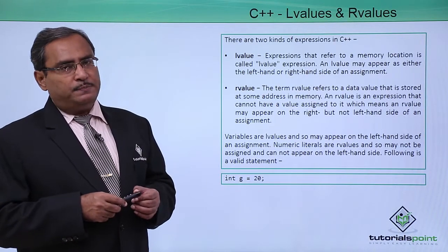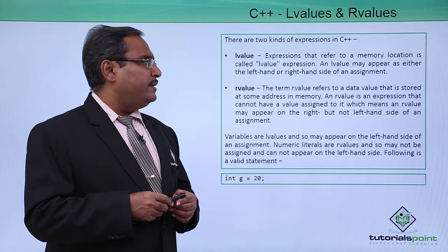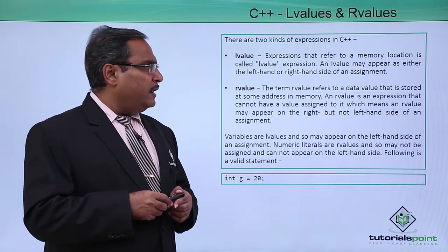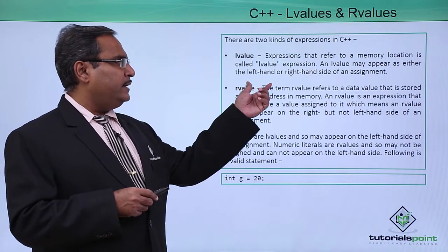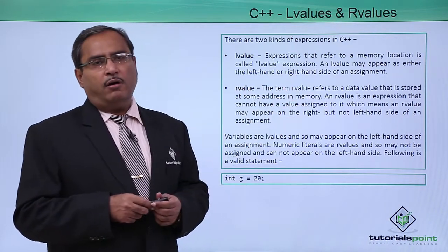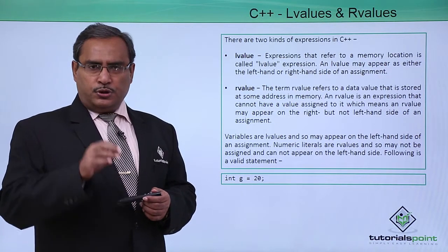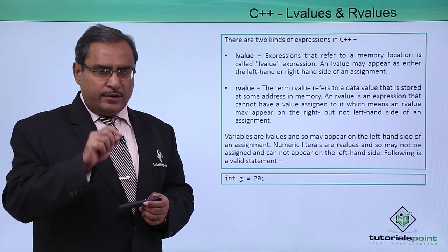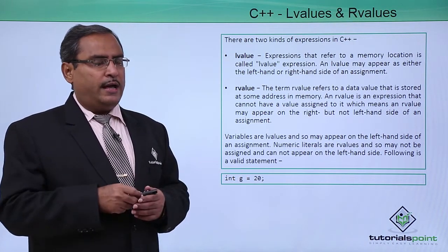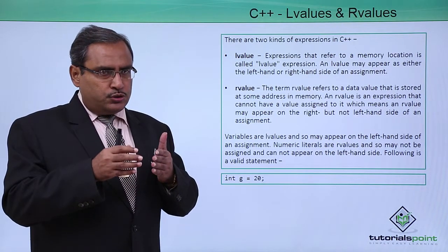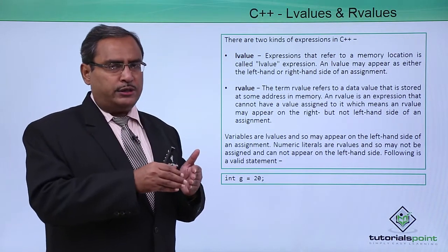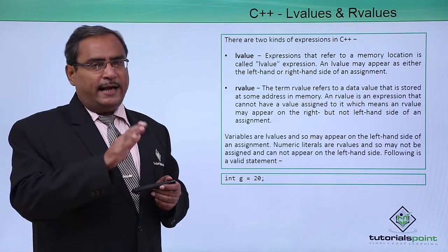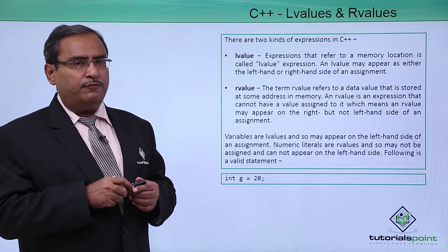There are two kinds of expressions in C++. L value expressions that refer to a memory location is called an L value expression, and L value may appear as either on the left hand side or right hand side of one assignment. Let us suppose a is equal to a plus 10. In this case, this a will be known as the L value, and in this way we can keep values on that respective memory location reserved for the variable a. This L value can occur on the left hand side as well as on the right hand side of one expression.